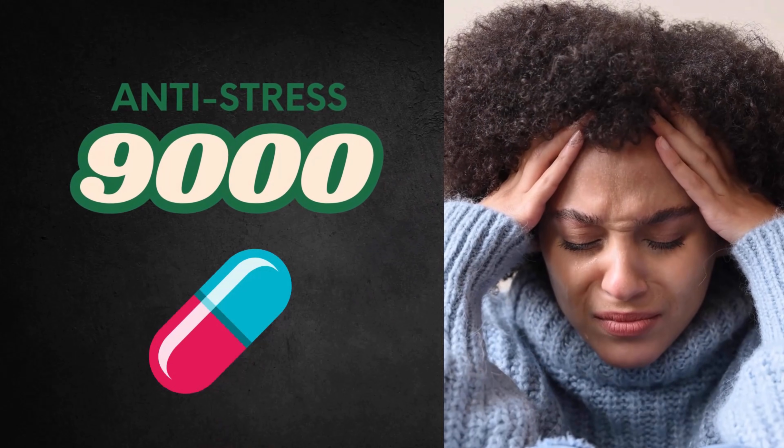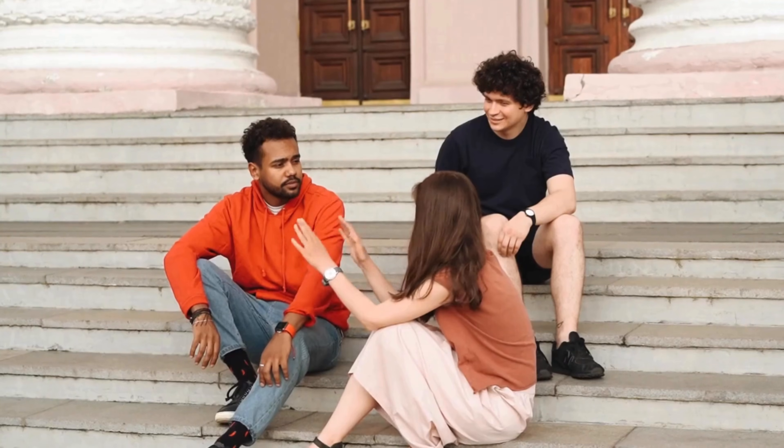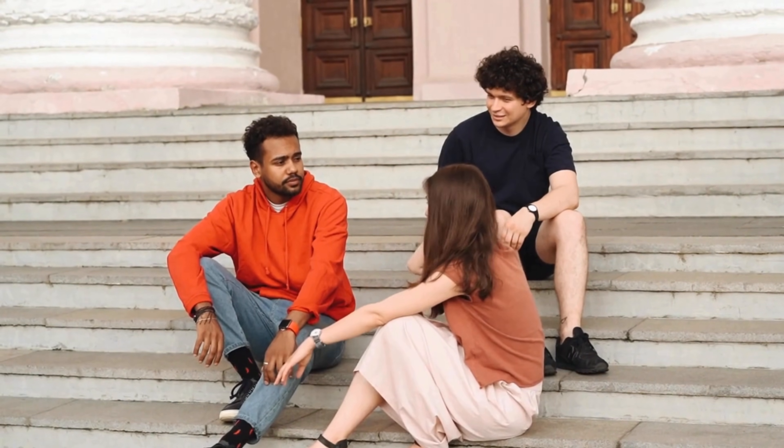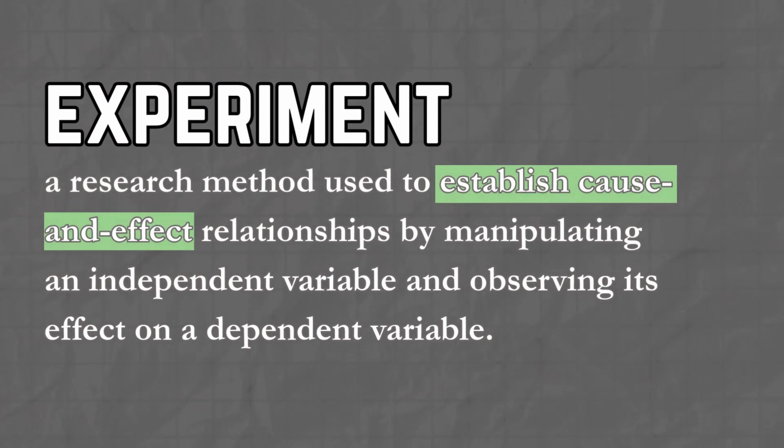Imagine you've just invented a new pill claiming to reduce stress. You call it Anti-Stress 9000. Catchy, right? Now comes the tricky part: how do you actually test to see if it works? Should you ask a few friends to try it, take it yourself, or do something more controlled? To answer a question like this, your best bet is an experiment.